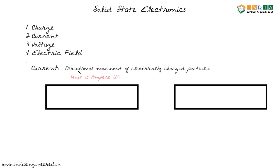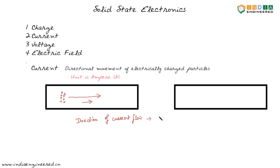Current is the flow of charged particles, so the flow will have some direction. Suppose we have a lot of positive charges moving in this direction — then we say that the direction of current flow is along this direction. The direction of current flow is assumed to be in the direction of positive charges. This was an earlier convention and we still follow it. So if we have positively charged particles moving in this direction, the current I due to positive charges is also along this direction.